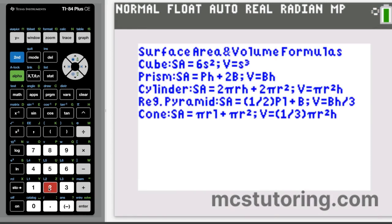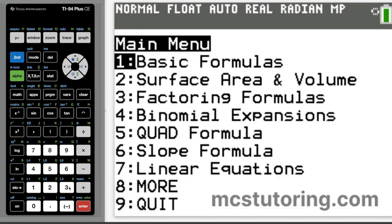Now, going on to the surface area and volumes, I've seen this a lot where students kind of get tripped up with the cube volume and surface area. So I put that in there, the cube surface area and volume. Same for the prism, cylinder, a regular pyramid where it's one half p times l plus b and the volume is bh over 3. And then the cone surface area and then the volume.